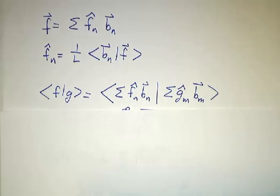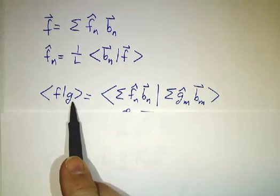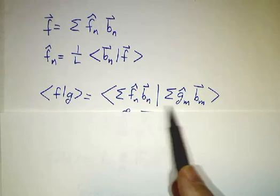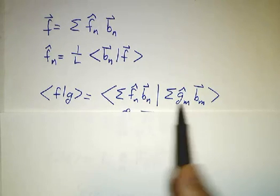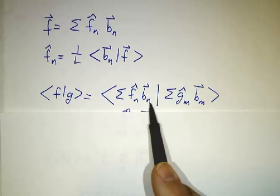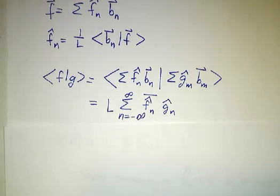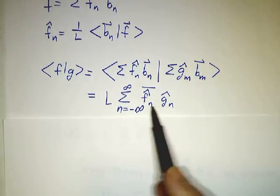If you want the inner product of two functions, f with g, it's a doubly infinite sum, 1 over n, 1 over m. But bn and bm are orthogonal unless n equals m. So the only terms that come out are the terms where n equals m.